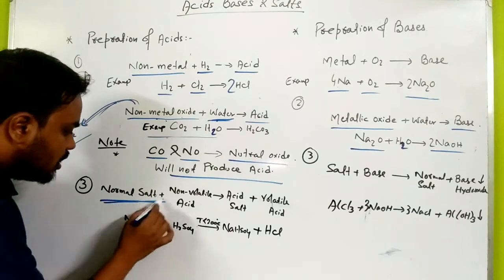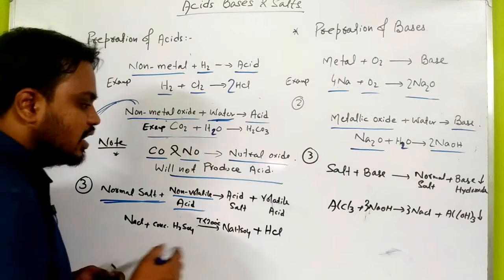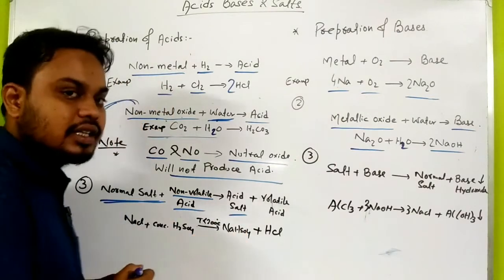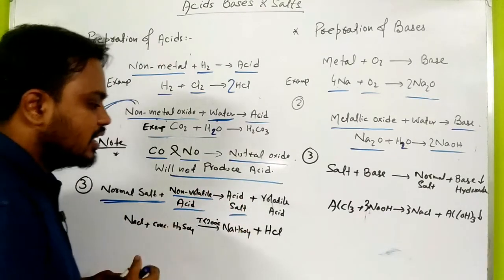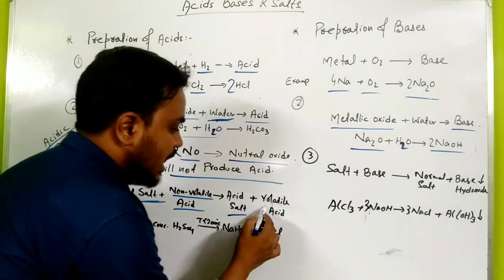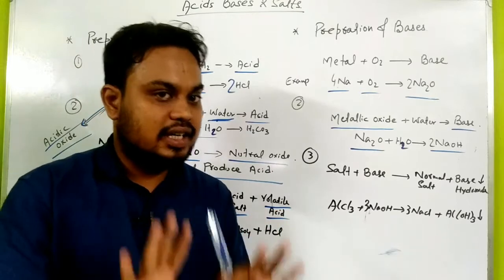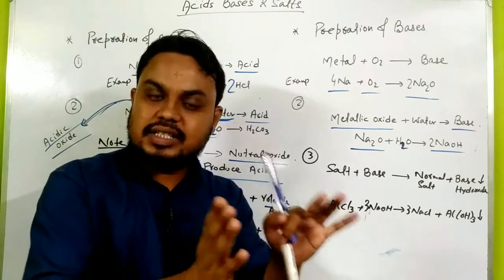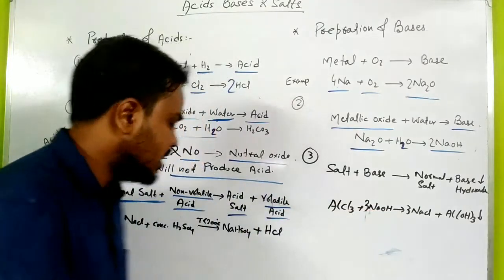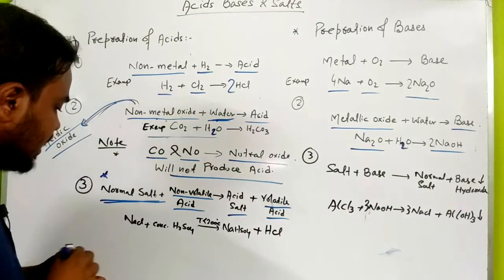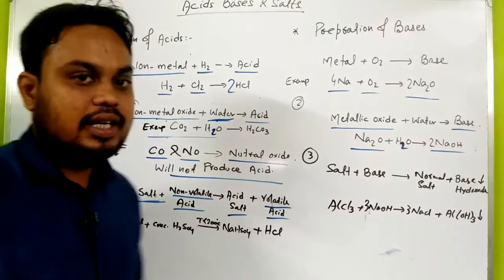So when normal salt reacts with a non-volatile acid like H2SO4, it forms an acidic salt and a volatile acid. The volatile acid formed could be HCl or nitric acid. You will study this again in the preparation of HCl and preparation of nitric acid topics. So: normal salt + non-volatile acid → acidic salt + volatile acid.